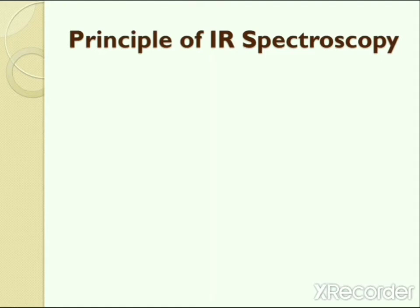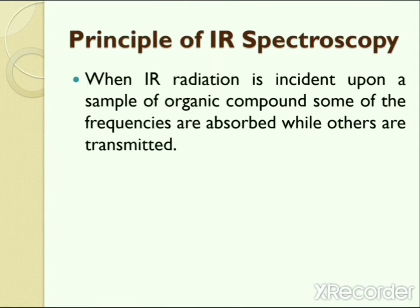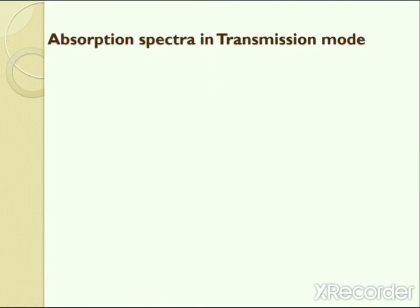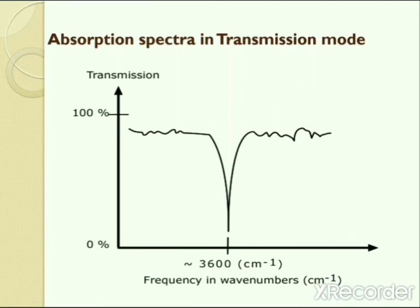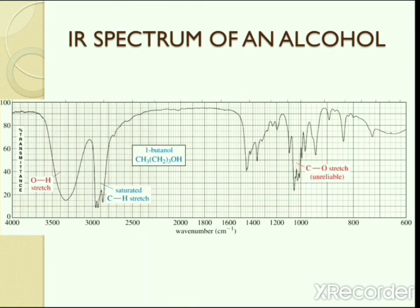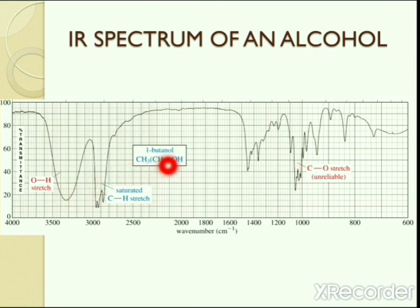The principle of IR spectroscopy: when infrared radiation is incident upon a sample of an organic compound, some frequencies are absorbed while others are transmitted. A plot of absorbance or transmittance versus wave number gives an infrared spectrum. The most preferred mode is transmittance mode. This picture shows an absorption spectrum in transmission mode — the infrared spectrum of the alcohol 1-butanol. Because infrared spectroscopy is used for determination of functional groups, this spectrum contains peaks for OH, CH, and CO groups, which together denote the presence of 1-butanol.